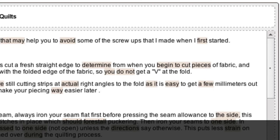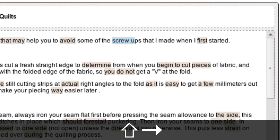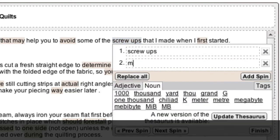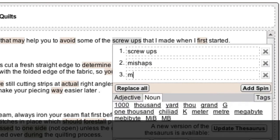If you want to add spin variations to a word that was not automatically spun, use the arrow keys to move the cursor to the beginning of the word you'd like to spin. Then hold down Shift and continually press the arrow key until the whole word is highlighted. With the word highlighted, you can now open a new spin block by holding down Shift and pressing the Open curly bracket key, just as before. You can then add your own variations using the same method.